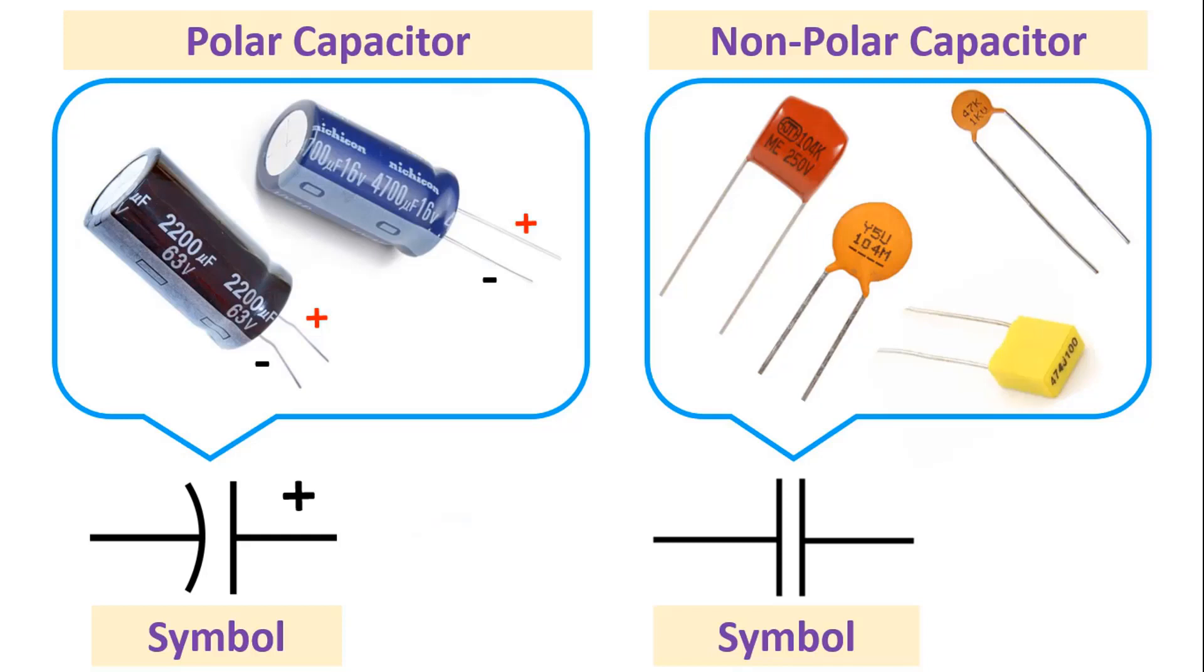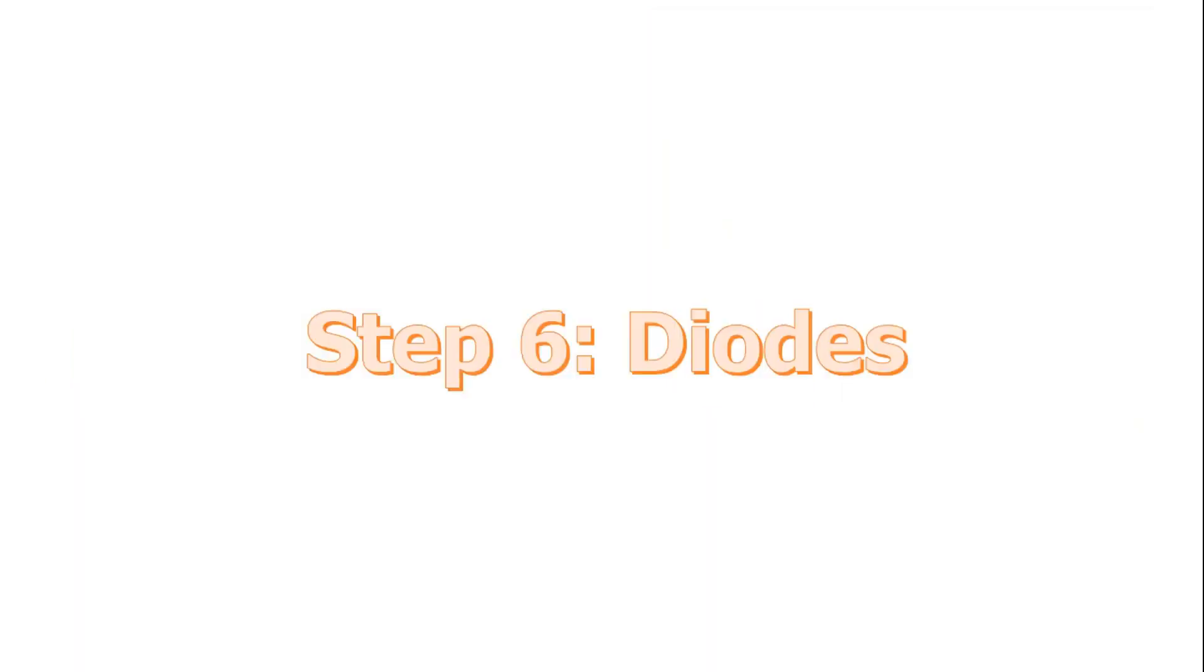Electrolytic capacitors are typically polarized. This means that one pin needs to be connected to the ground side of the circuit and the other pin must be connected to power. If it is connected backwards, it won't work correctly. Electrolytic capacitors have the value written on them, typically represented in microfarads.